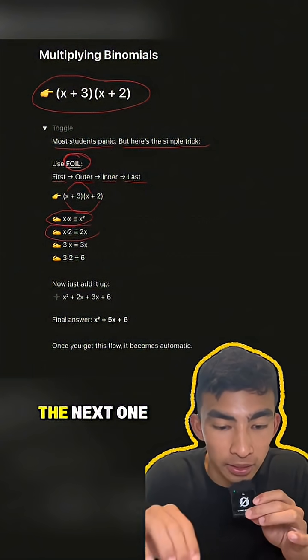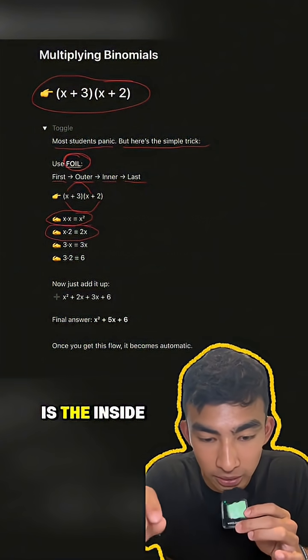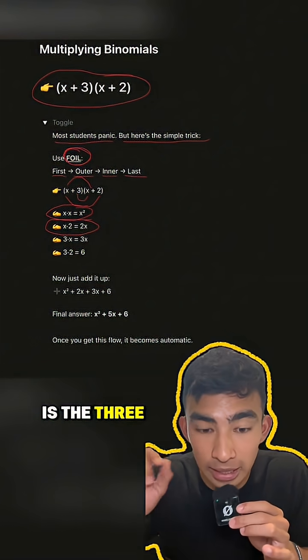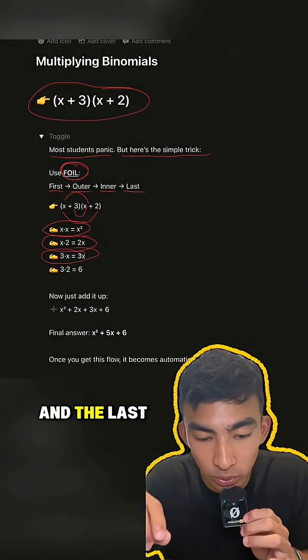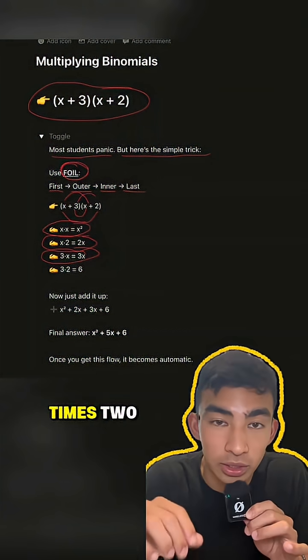The second one we've got there, the next one is the inside. So the inside is the 3 times the x which is going to give you 3x, third one we've got there, and the last one is 3 times 2 which is going to give you 6.